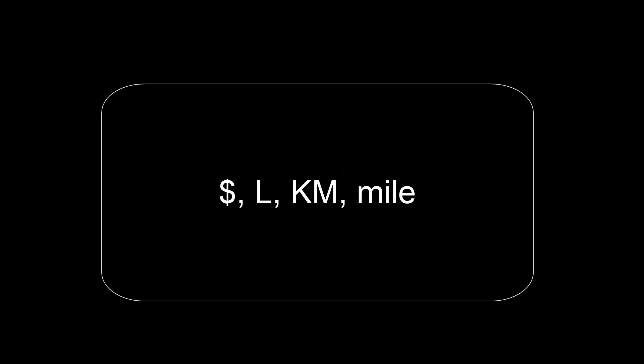A number is often not just a number. Take the number 1 for example. One dollar is very different to one litre of water, and it's very different to one kilometre, and it's very different to one mile. The dollar, litre, kilometre, and mile are different units, and can be handled using the type system in Julia.